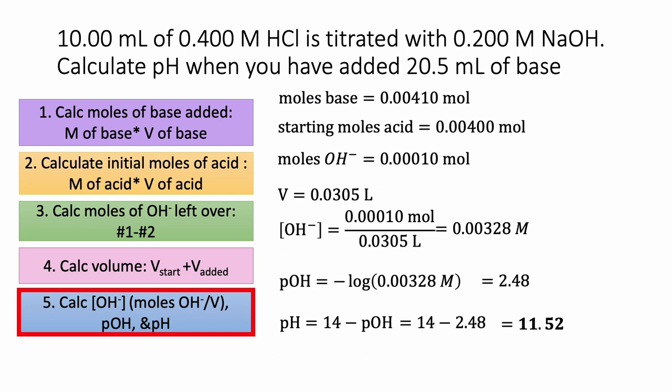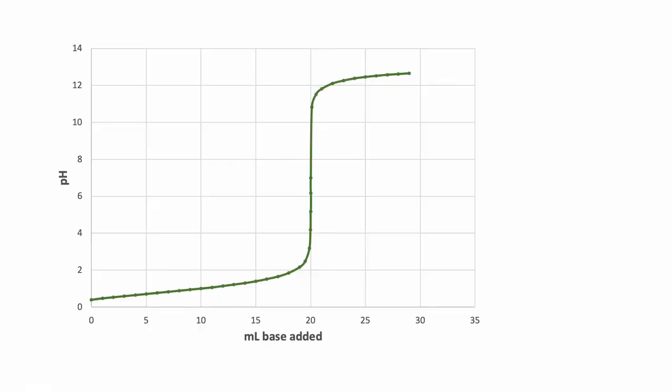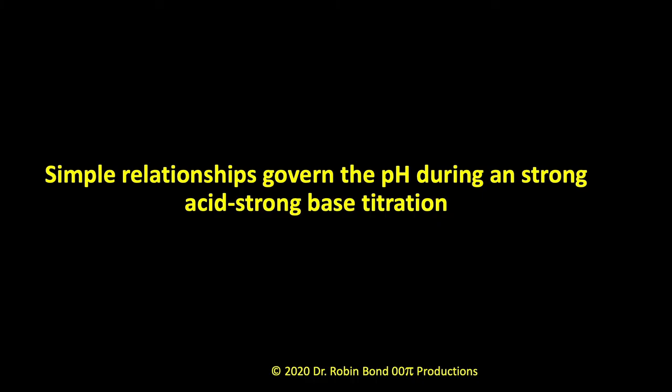Adding those calculated points after the equivalence point to our graph, you can see that after 20 mils the graph continues to go up steeply until it's well past pH 10, then it starts leveling off. Calculating pH for a strong acid–strong base titration basically comes down to fairly simple solution-based or stoichiometric relationships.